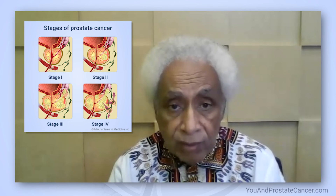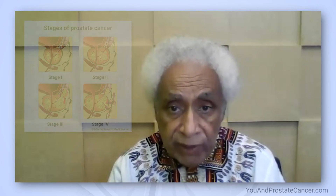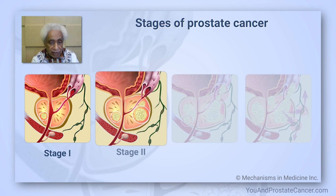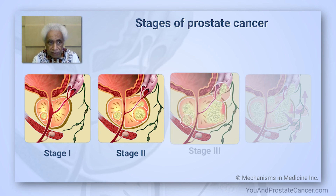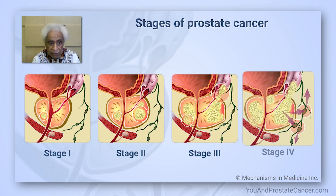Prostate cancer is also staged in terms of whether it is local or whether it has spread. Stage one means it's localized in the prostate. Stage two means it may have spread a little beyond the prostate. Stage three is more extensive spread, and stage four is distant spread.